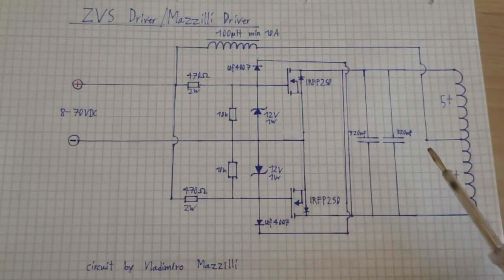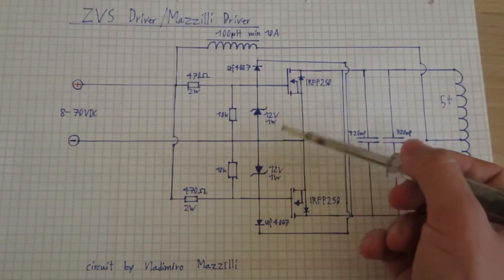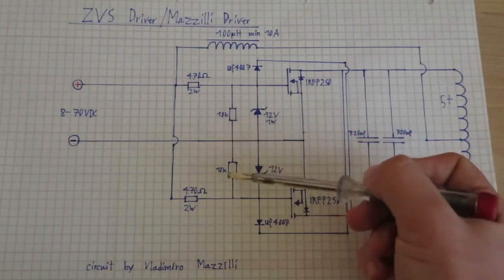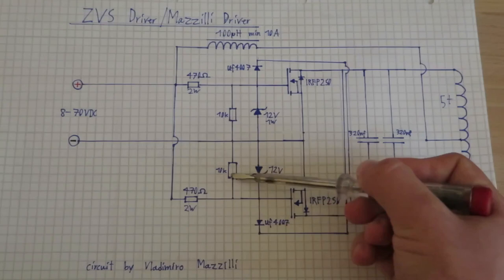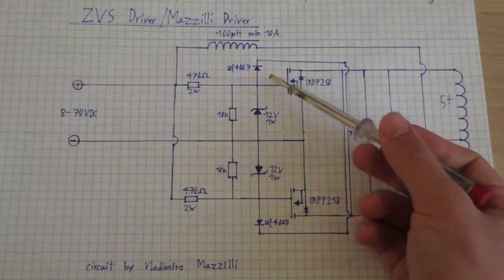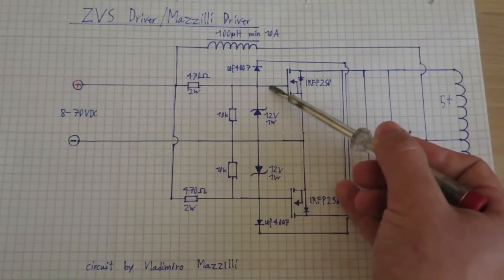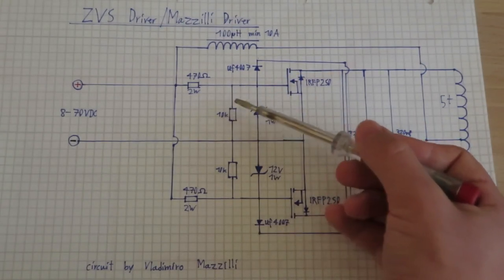And then besides all of that we also have some protective zener diodes here which prevent the gates from overvoltage, and also these resistors which I would say are pull-down resistors. But considering the fact that the diodes are discharging and charging the gates of the transistors, I'm not entirely sure what their purpose is, but it's probably some kind of pull-down resistor I would guess.